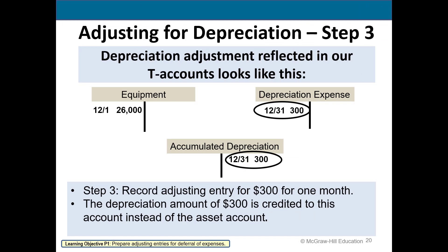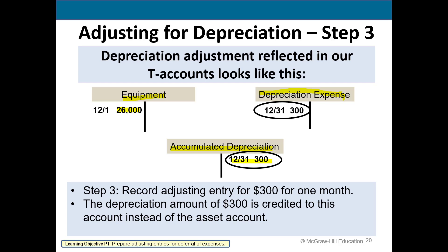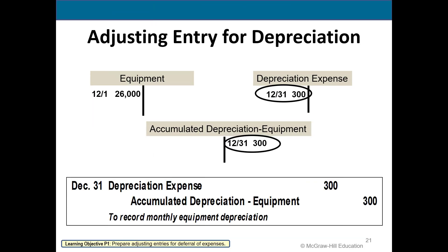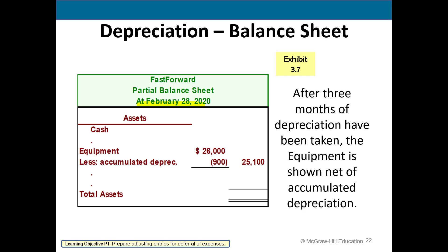Instead of crediting the equipment account like we did for supplies, we keep equipment at the original cost of $26,000 and use a contra asset account called accumulated depreciation. The journal entry is: debit depreciation expense and credit accumulated depreciation. After three months, accumulated depreciation is $900 (300 × 3). On the balance sheet we show the full cost of the equipment minus accumulated depreciation, and the difference is called the book value.